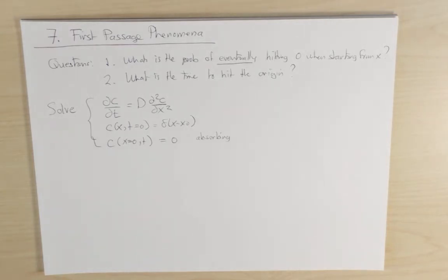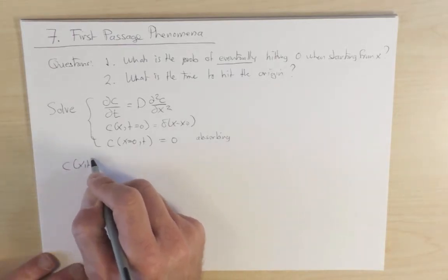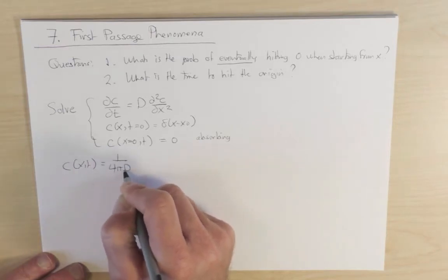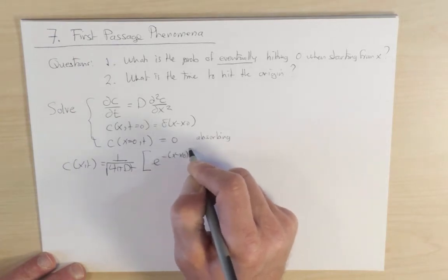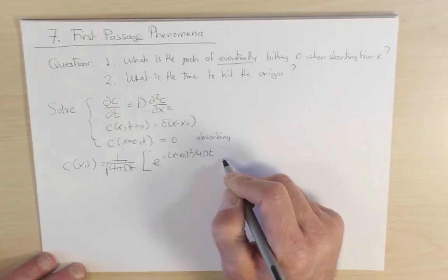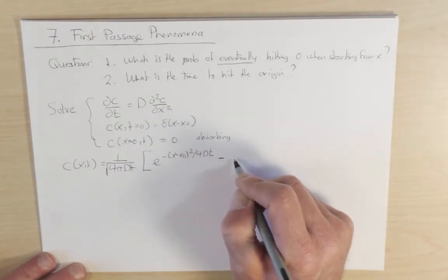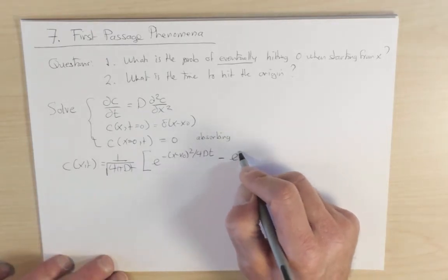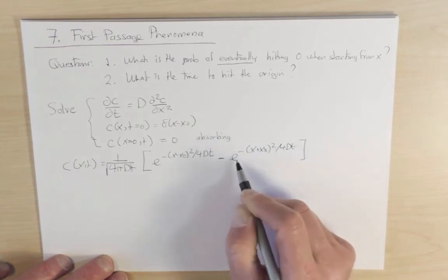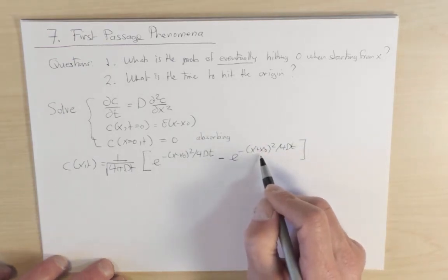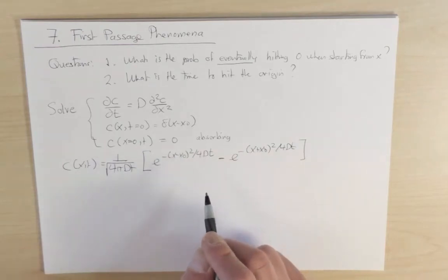So let me write down the solution. c(x,t) equals 1 over square root of 4πDt times the initial Gaussian e to the minus (x minus x naught)² divided by 4Dt, and then I have to subtract away the image contribution, so there's a minus sign, and then we have e to the minus (x plus x naught)² divided by 4Dt. And so this is a Gaussian, an anti-Gaussian centered at minus x naught, superposed with a Gaussian centered at x naught, and the sum of these two things is by construction zero at x equals zero, so it's a solution to our original problem.